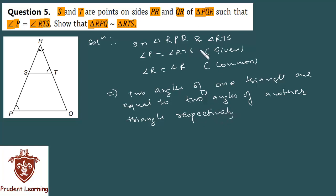From equations one and two, which implies that therefore by angle-angle similarity criterion, triangle RPQ is similar to triangle RTS. Hence proved.